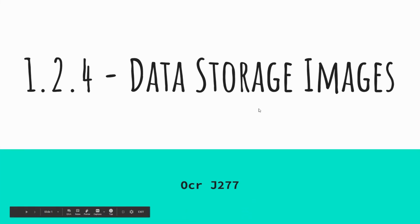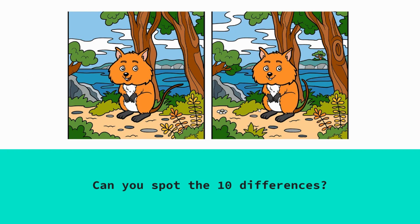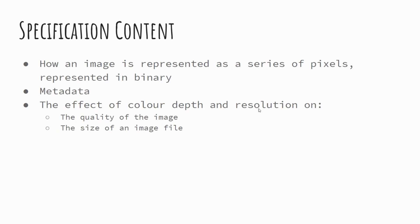We're going to look at data storage and images in particular — how computers store images in binary. We're going to be looking at how images are represented in a series of pixels and stored as binary values, metadata and what that is, as well as the effects of colour depth and resolution on the quality of an image but also the size of the file.